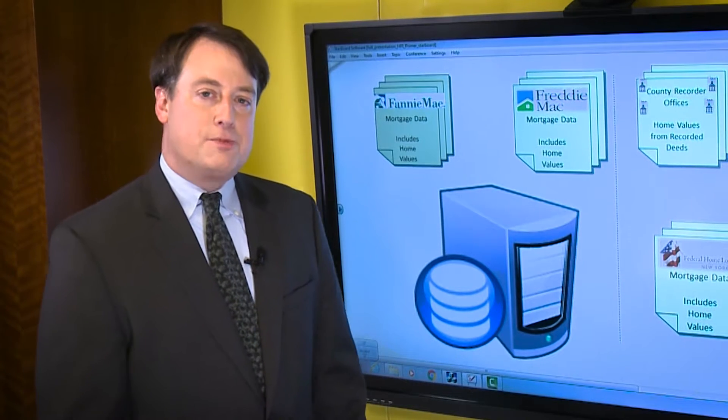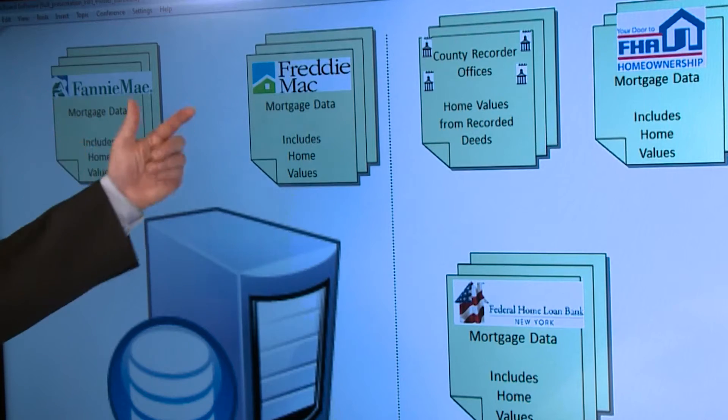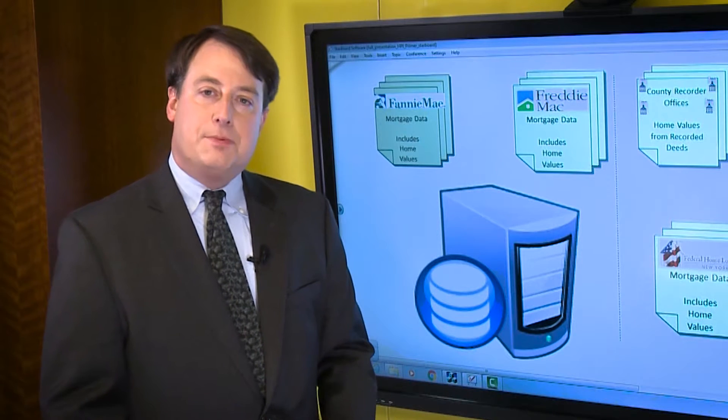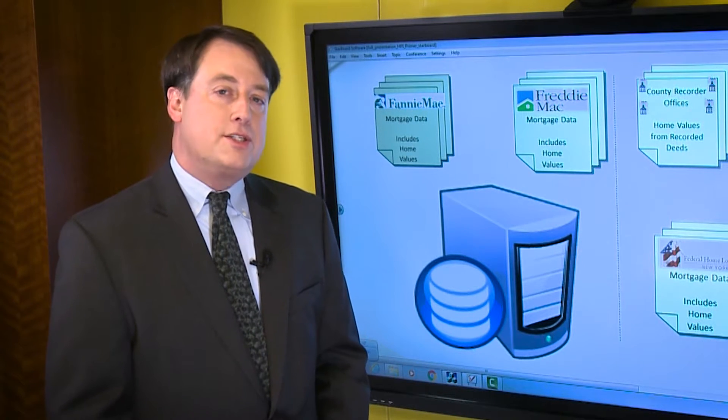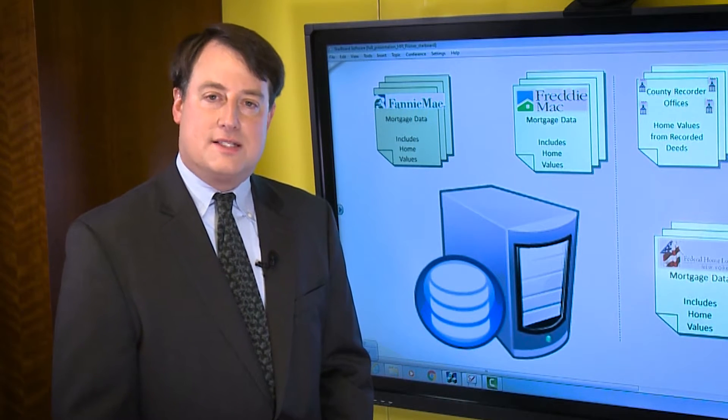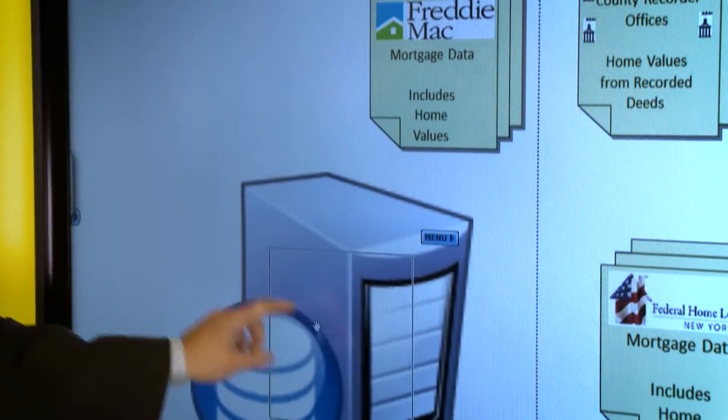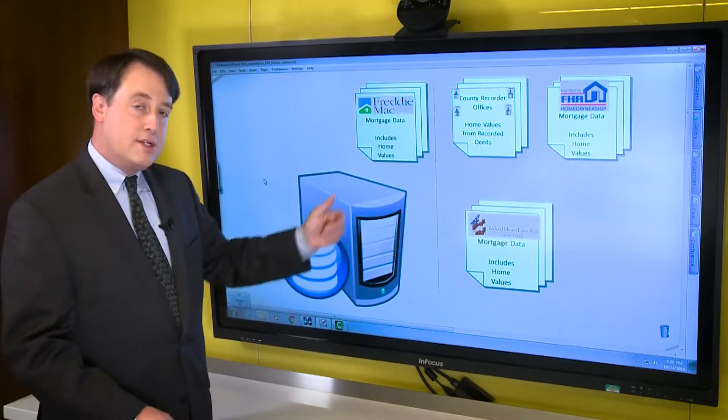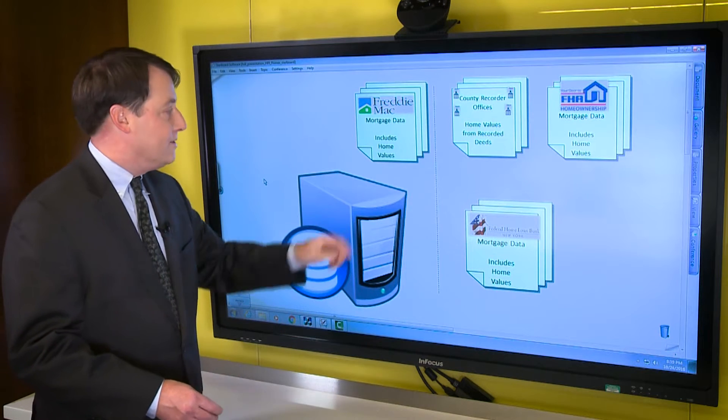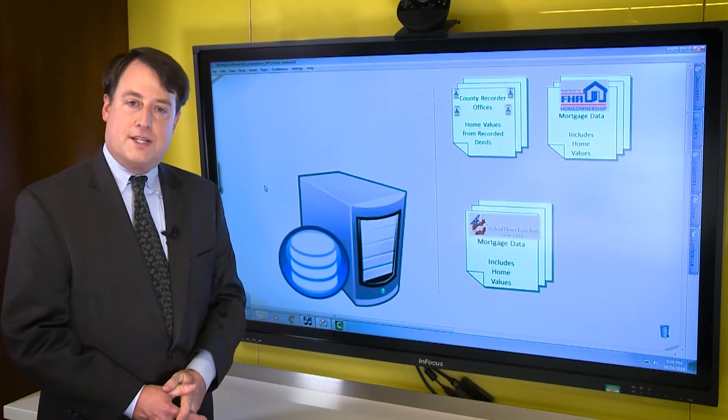We begin by assembling house price data from a variety of sources, primarily Fannie Mae and Freddie Mac. Each month these enterprises submit to us loan-level data for mortgages they have bought or guaranteed since the late 1970s. The mortgage data, which goes into our database, includes home values, that is sales prices and appraisals, for loans used to purchase properties or refinance mortgages.